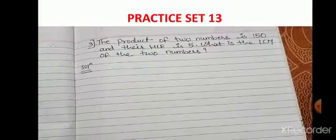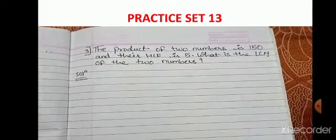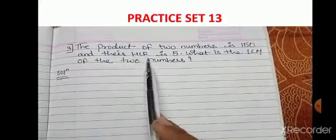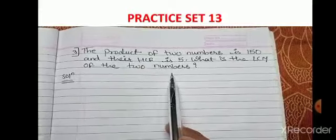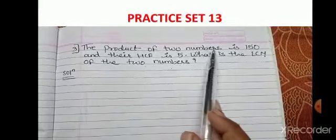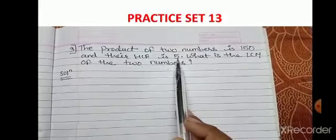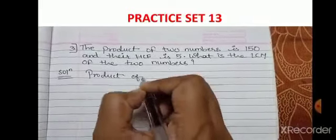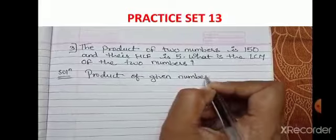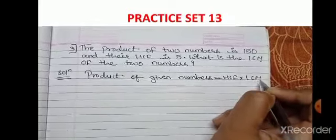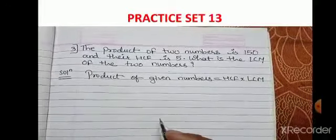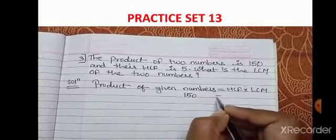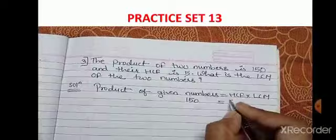Now see question 3 from your workbook: the product of two numbers is 150 and their HCF is 5 — find the LCM. What is given: product of two numbers = 150, HCF = 5, and we have to find the LCM. We write the statement: product of given numbers = HCF × LCM, so 150 = 5 × LCM.